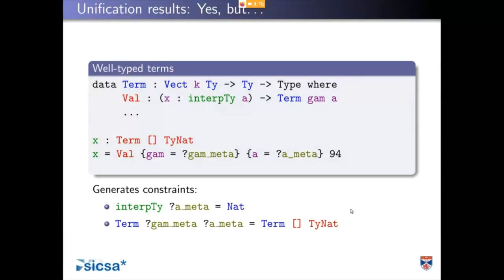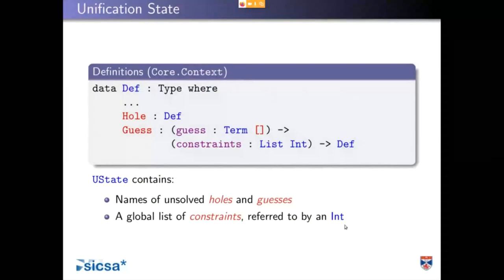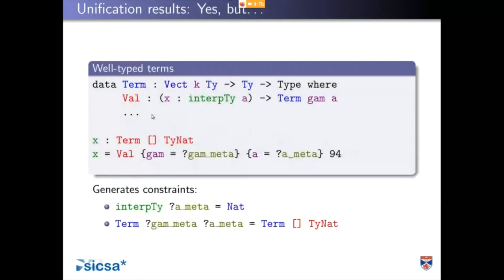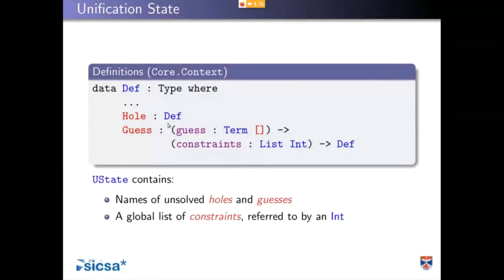This is why we have to think about constraints — they might get generated and we can't just give up immediately. To revisit definitions from yesterday: we saw the definitions that exist in our context, and I pointed to hole and guess. A hole is a meta variable. When the elaborator encounters gam meta and a meta, it's going to add them to the global context and give hole as a definition. A guess is an ordinary definition in many ways — it's essentially a meta variable applied to its current environment.